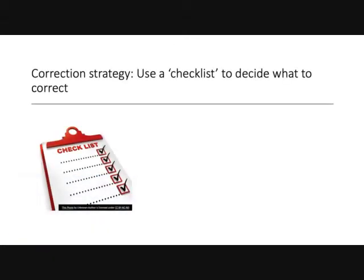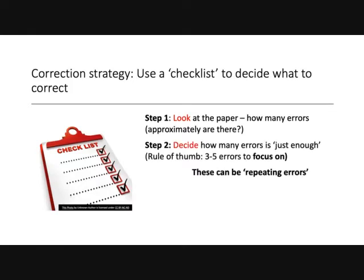Just a reminder: we have a correction strategy in place. You have a checklist to decide what errors to correct first. Your first step is to look at the student's work — how many errors are there approximately? Step two: decide how many errors is just enough to focus on. The rule of thumb is about three to five errors, not too many more because it will overwhelm the student. Remember, if the same error is repeating over and over, that counts as one — a repeating error.